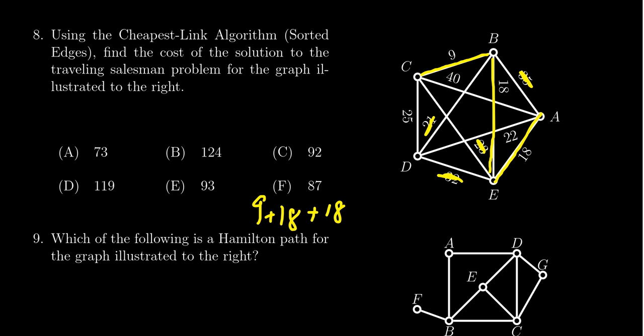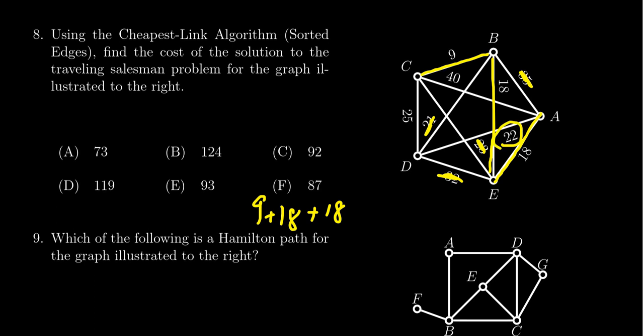Then looking on the board, what's the cheapest option I haven't scratched out already? It looks like 22 is going to be my next cheapest one, which I'm allowed to do. I'm going to go A to D there, so add 22 onto that one.